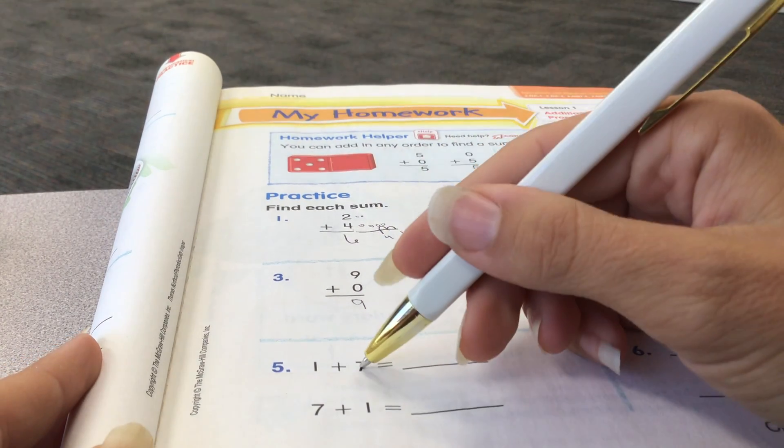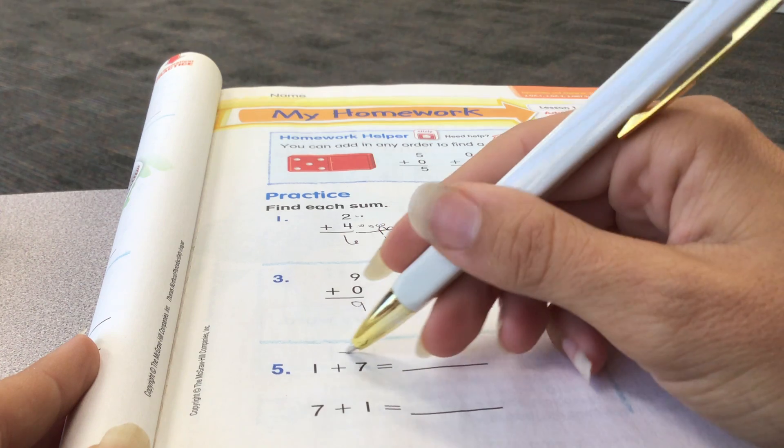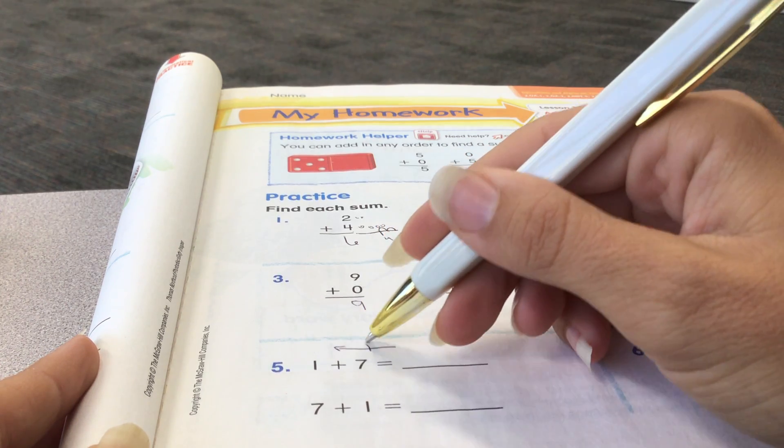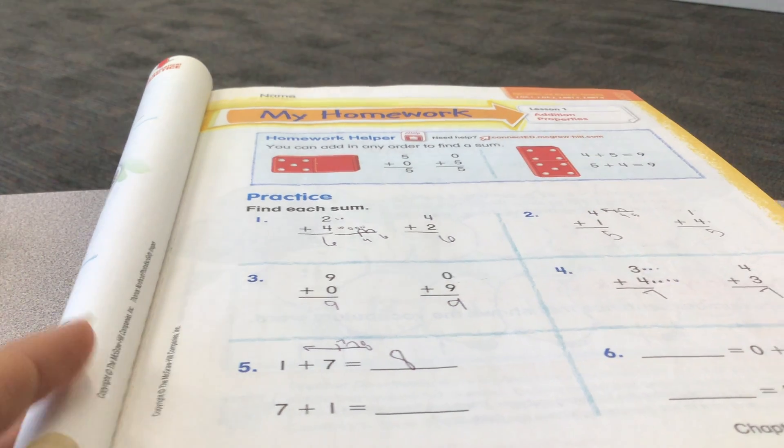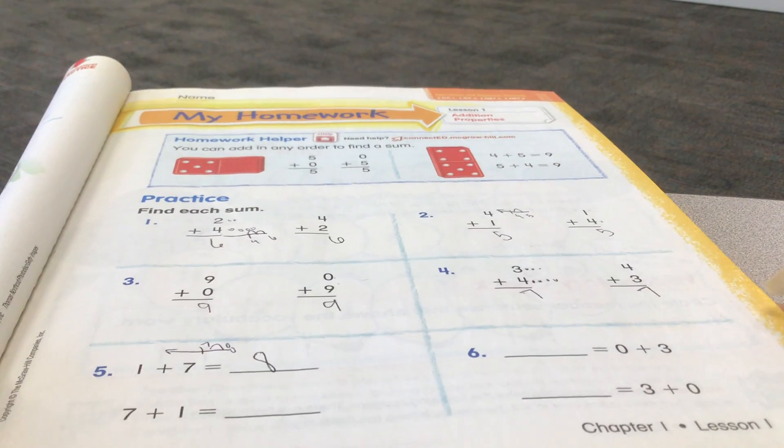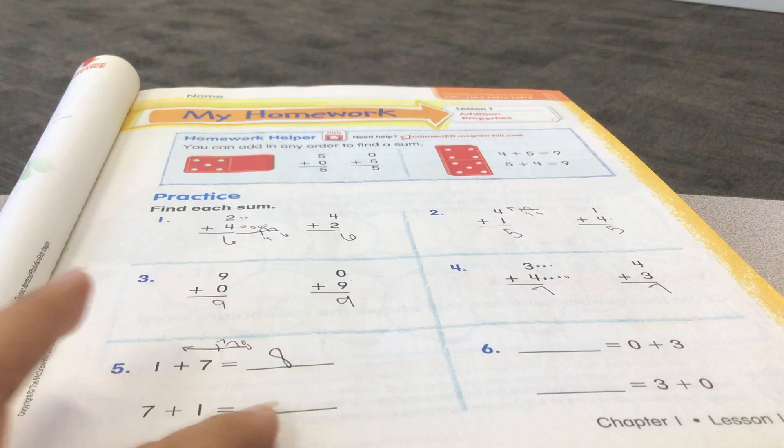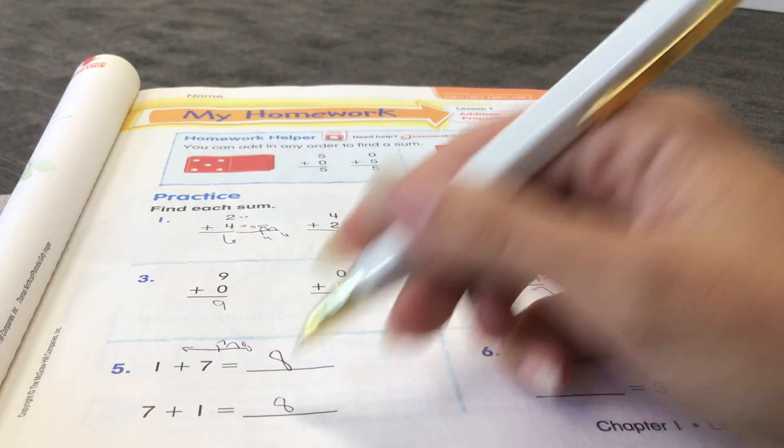1 plus 7. Let's start with 7. Draw that number line. 1, 7, 1 jump would be 8. That's easy. And then 7 plus 1, same thing. Still 8.